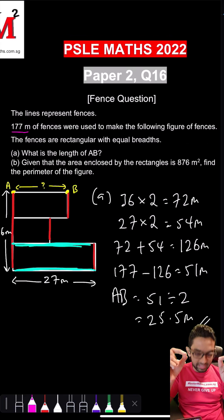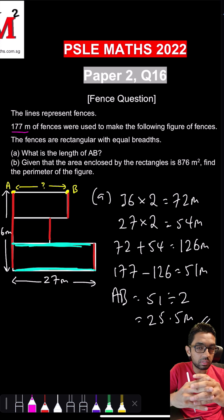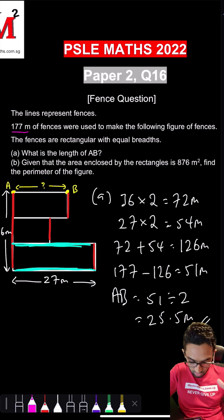Now part B is next. Given that the area enclosed by the rectangles is 876 square meters, find the perimeter of the figure, which also means the outline of this figure. All the lengths that are on the outside, we need to find those lengths and add all those things up. And the great thing about this question is that we know many of the outlines already.